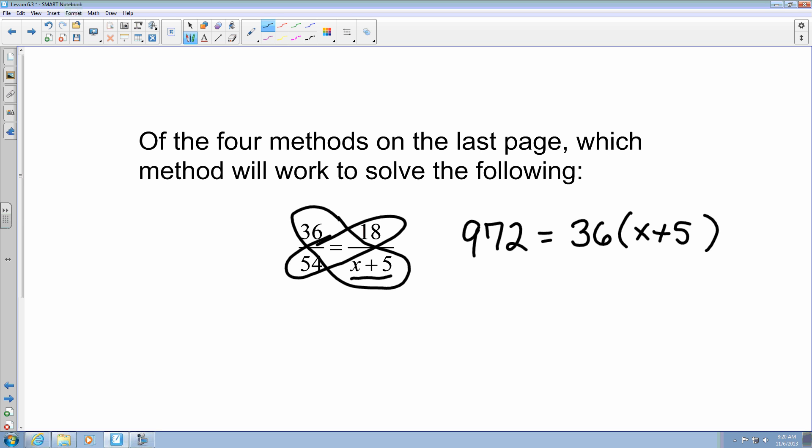Now, this is where the distributive property comes in. I'm going to rewrite this 972. It equals, and I'm going to multiply these two terms. It gives me 36x. I have a plus sign here, so I get plus. And I'm going to take 36, and multiply it by 5, which gives me 180.